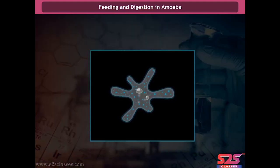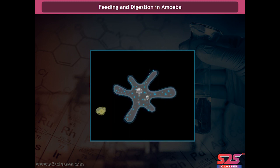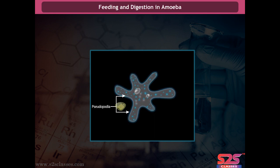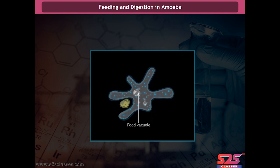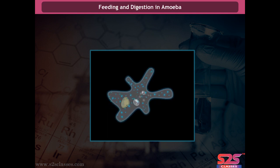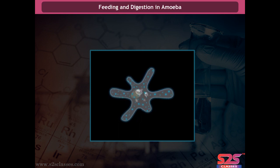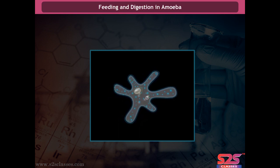Amoeba can constantly change its shape by forming finger-like projections called pseudopodia, or false feet, which help it move and capture food. When an amoeba senses its prey, it pushes out pseudopodia around the prey and engulfs it. The food gets trapped in a food vacuole, which secretes digestive juices to break down food into smaller components. The digested food is absorbed by the amoeba for growth, maintenance, and multiplication. The undigested waste material is then expelled from the body.